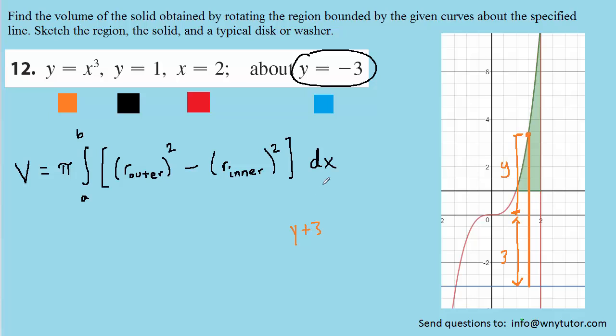It is y plus 3, but we are integrating with respect to x, which means we need our expression in terms of x. Now luckily for the curve that this orange point is situated on, we know that the y is equal to x cubed. So we can simply replace that y with x cubed, making the outer radius x cubed plus 3. That's what we'll be plugging in right here.